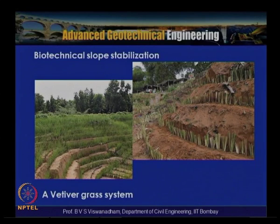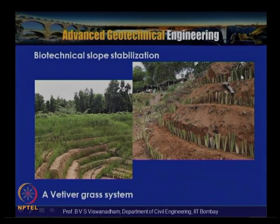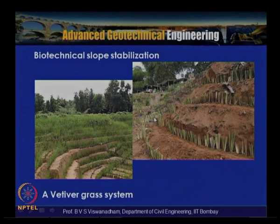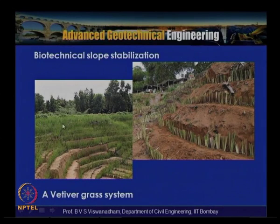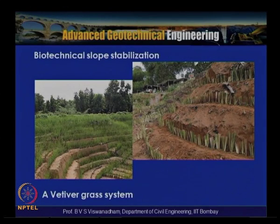A typical slope with steps and small berms is shown, with selected plants placed along the berms. After some time, a vetiver grass system turns the entire area green. This is a promising area for slope stabilization and is attracting significant research activity.